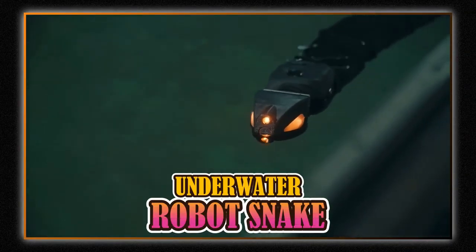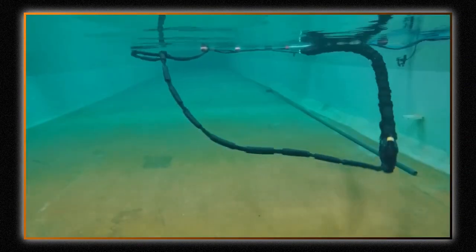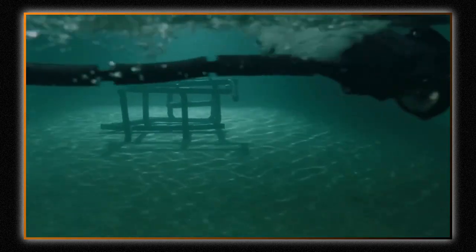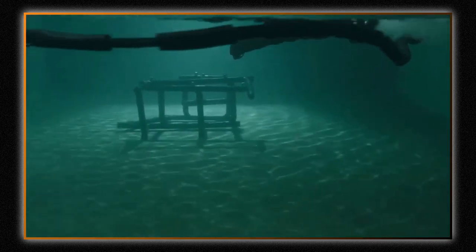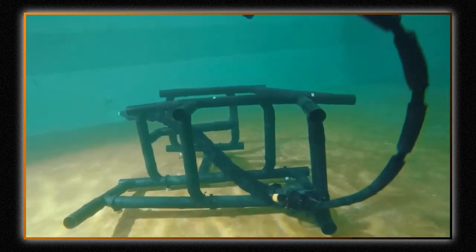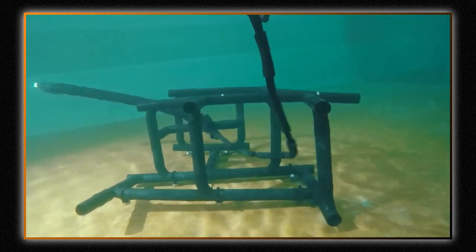Underwater Robot Snake. The purpose of this mechanical snake is to conduct upkeep and repairs on a variety of mechanisms that are located on the seafloor, mostly those that are located on oil platforms. It is able to take the place of expensive autonomous underwater vehicles, easily wriggling into spaces that bulky robots are unable to access.